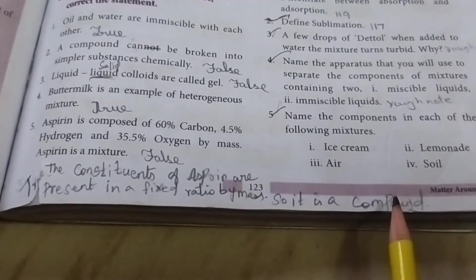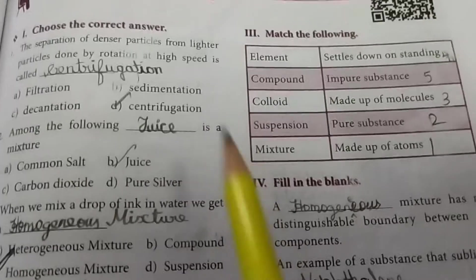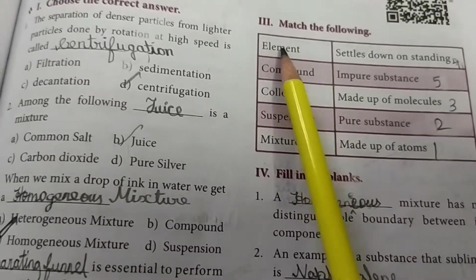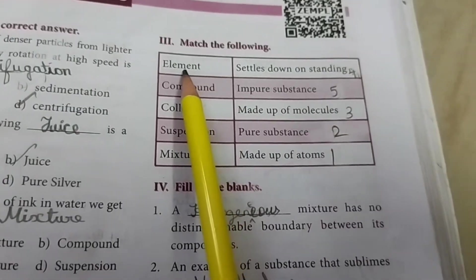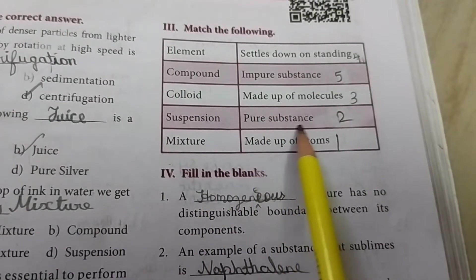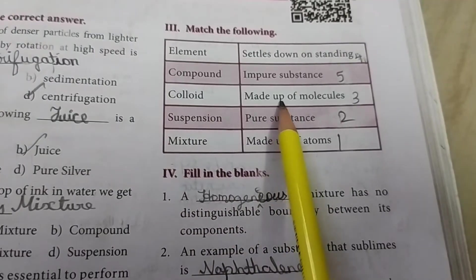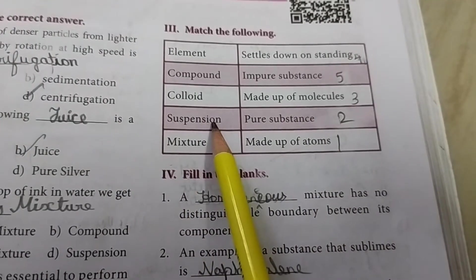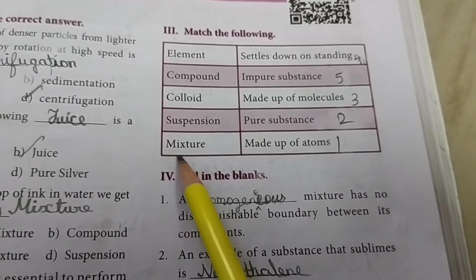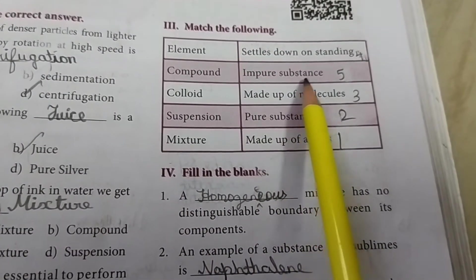Third: Match the following. Element: made up of atoms. Compound: pure substance, made up of molecules. Colloid suspension: settles down on standing. Mixture: impure substance.